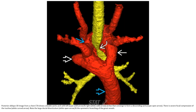A posterior CT image from a chest CTA shows the aortic arch with left and right arches converging to form the descending aorta. This demonstrates focal compression of the trachea. Note the large ductal diverticulum and the symmetric branching of the great vessels.